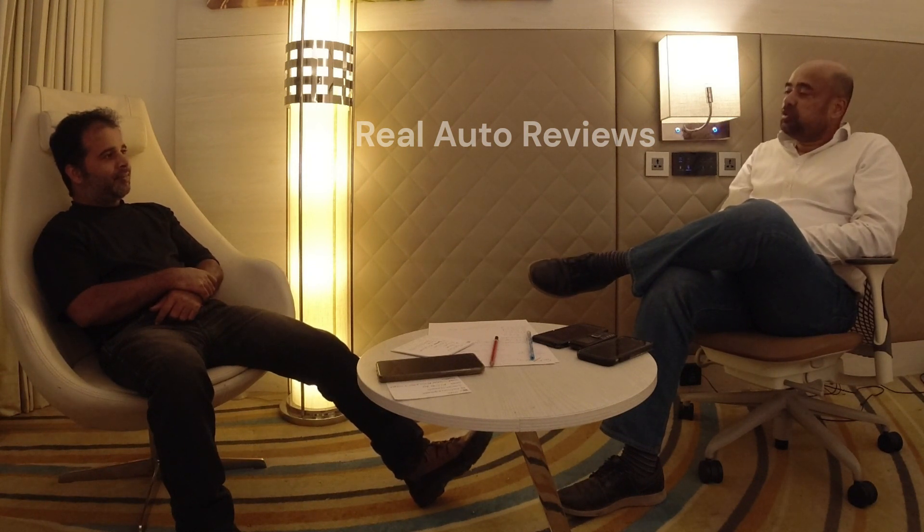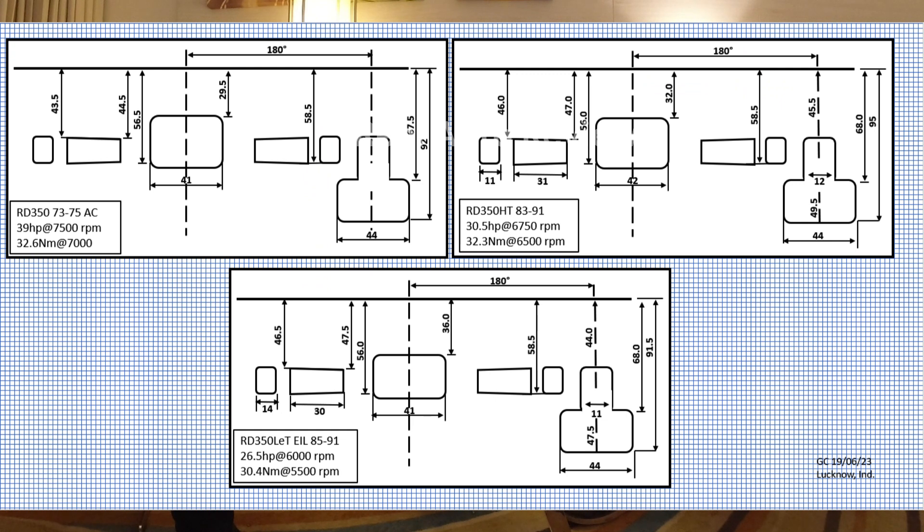If you do a general search online, the only difference highlighted is the exhaust port opening. However, I have measured all three barrels. I have a new 39 ps barrel, a standard stock HT barrel, and I borrowed a non-chipped LT barrel. The transfer ports have also been lowered — this is something you might know but you won't find on the internet. The HT and LT both had similar transfer heights.